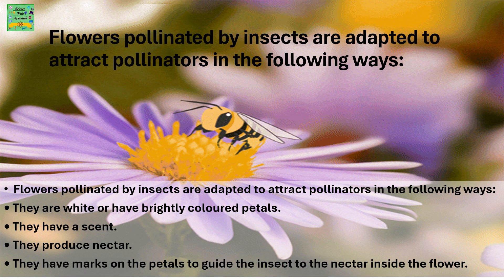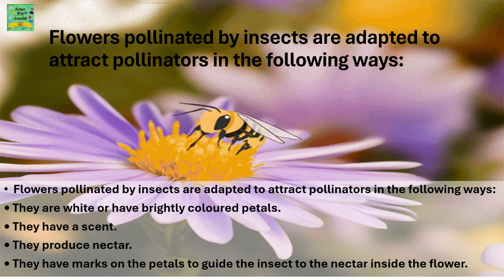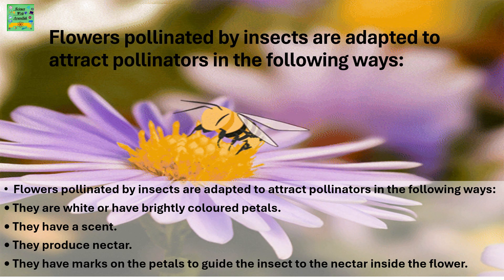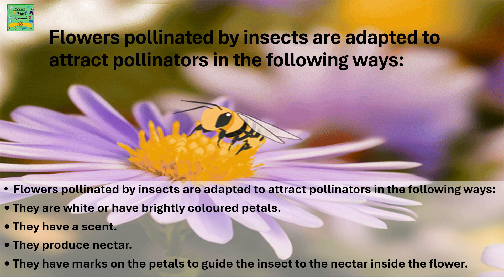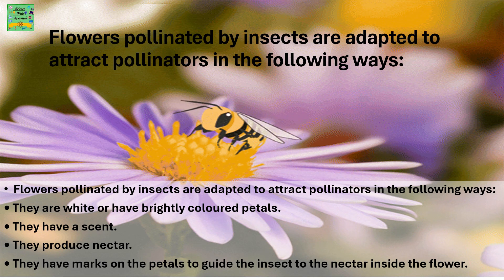Flowers pollinated by insects are adapted to attract pollinators in the following ways: the flowers are white or have brightly colored petals; they have a scent; they produce nectar; and they have marks on the petals to guide the insect to the nectar inside the flower.